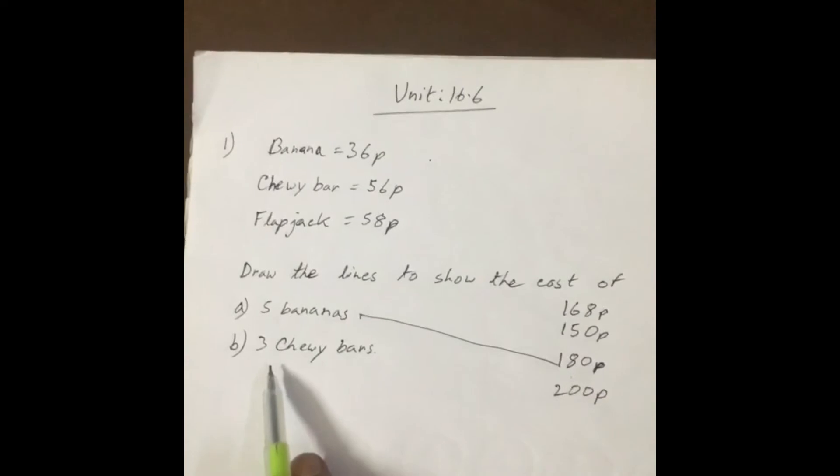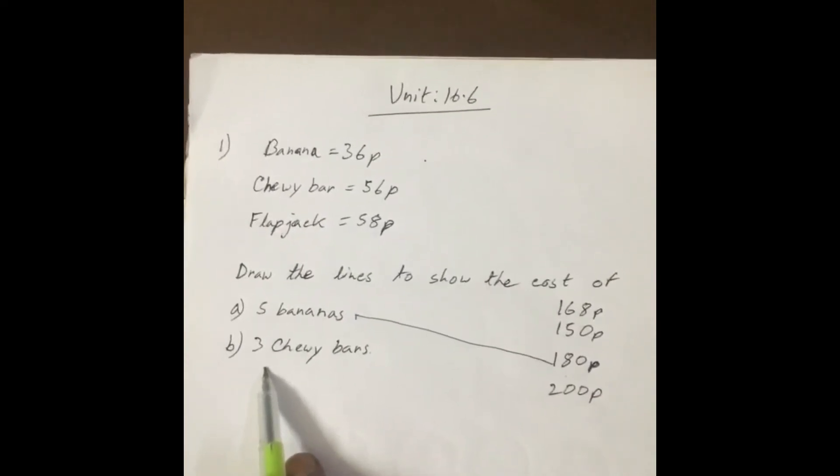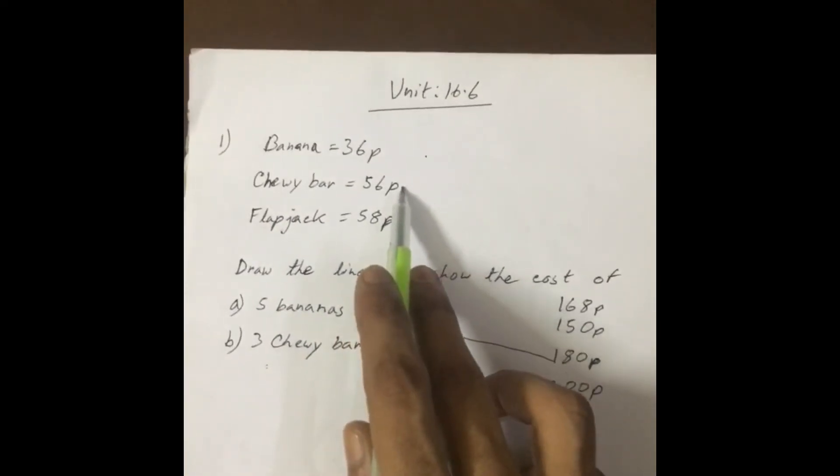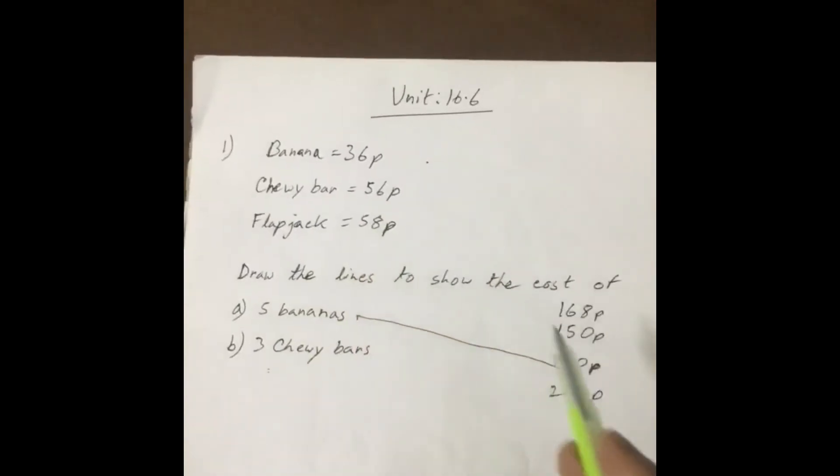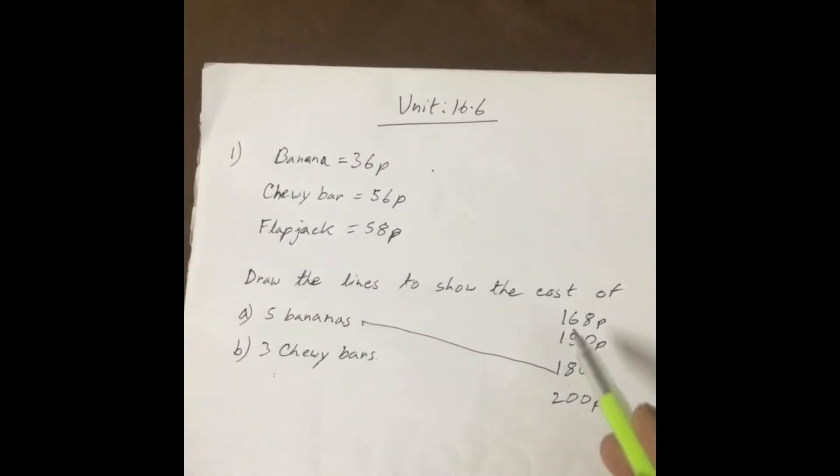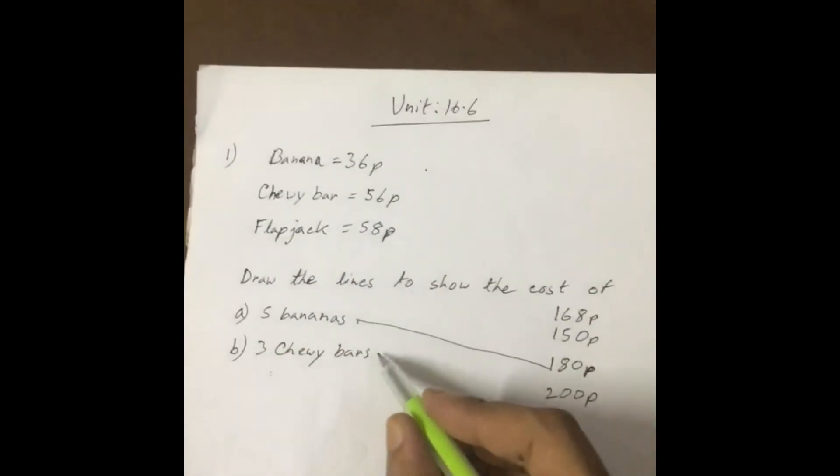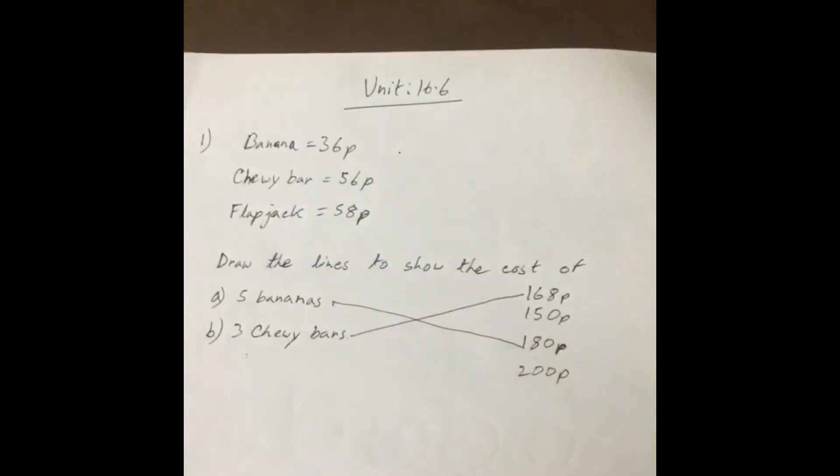Three Chewy bars: 3 into 56. The answer is 168. So we know 168 is here, we just link it up to show the right answer.